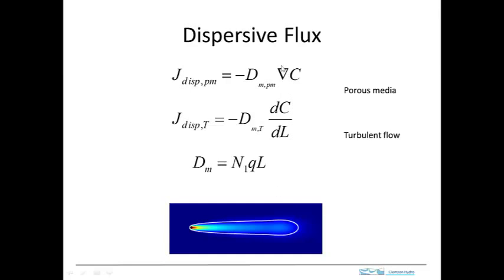This diffusivity or dispersive flux is what forms plumes that spread. Here's a plume formed by a tiny source right there — a little speck — with a uniform flow in this direction. The plume is spreading out and is perhaps ten times wider at the far end than near the source. The flux in this transverse direction is driven by this dispersion process.